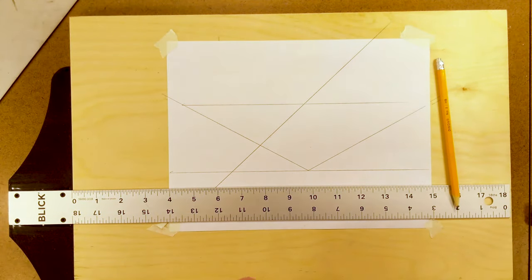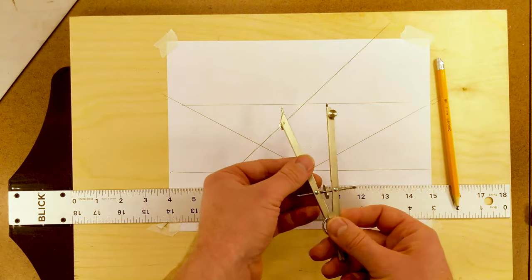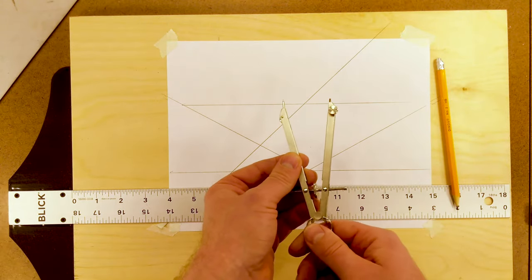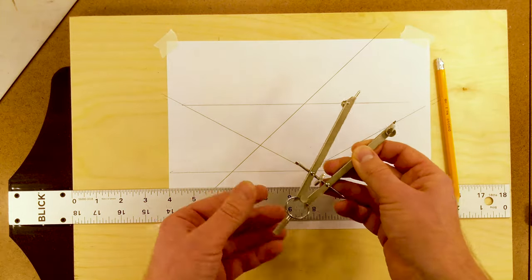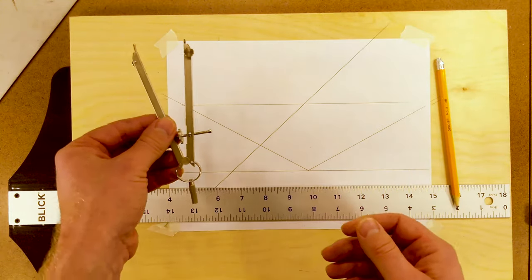Another tool that is very useful is a compass. We definitely need a compass to draw circles, arcs, curves, ellipses, measure in between different segments, and find the center of things. So a compass is an indispensable tool.